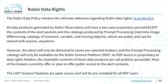The Rubin Observatory Data Policy remains the ultimate reference regarding Rubin data rights, and is available at ls.st/rdo-013. All data products generated by Rubin Observatory will have a two-year proprietary period, except the contents of the distributed alert packets and the catalogs produced by prompt processing, both of which are public and can be shared with anyone, anywhere, worldwide. However, alerts will only be delivered to seven preselected brokers, and the prompt processing catalogs will only be available via the RSP. As RSP access is proprietary to data rights holders, the shareable contents of these data products are not publicly accessible. Most brokers currently offer or plan to offer public access to the alert packet contents. The LSST science pipelines are open source and will be available to all RSP users.